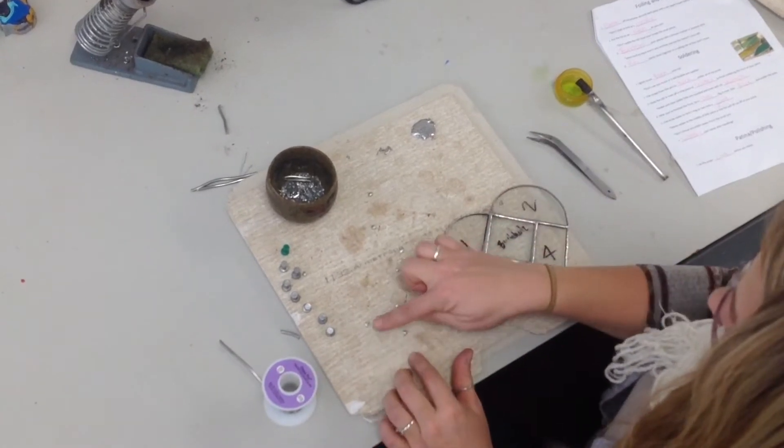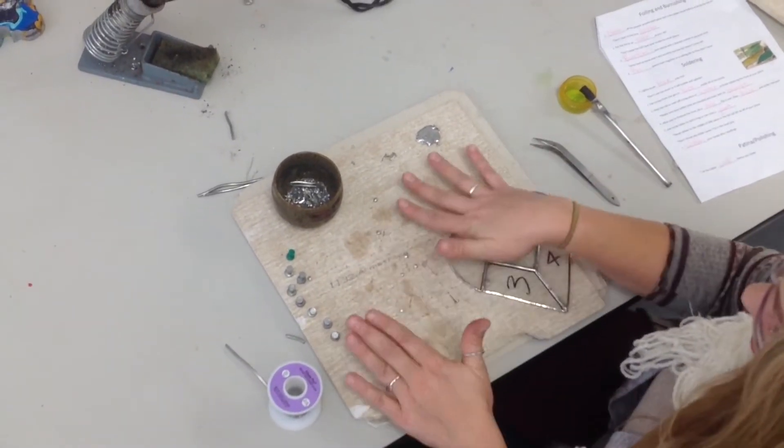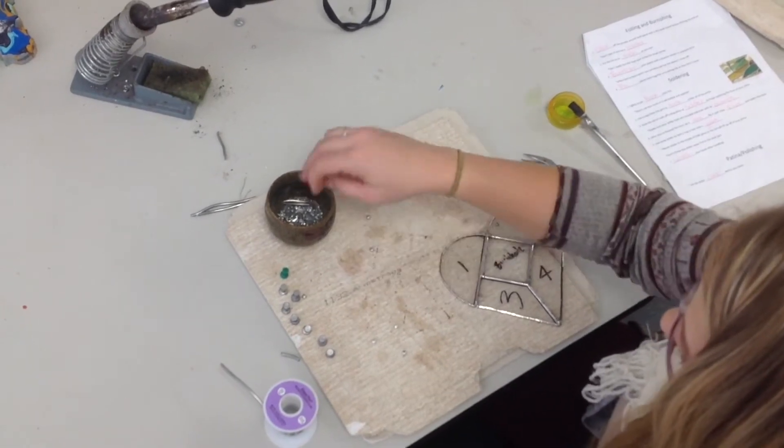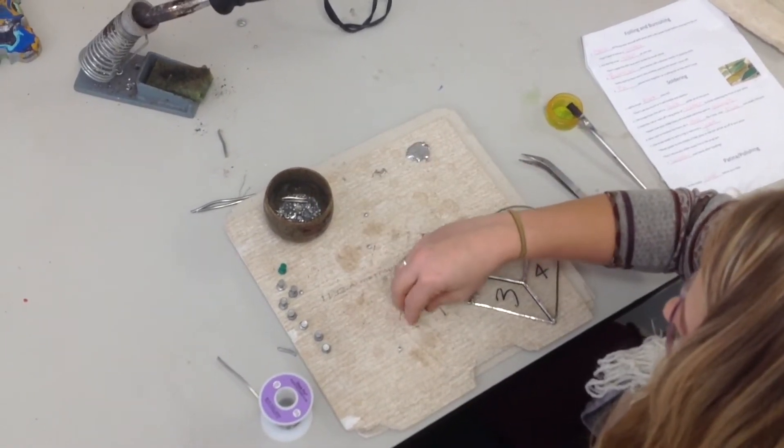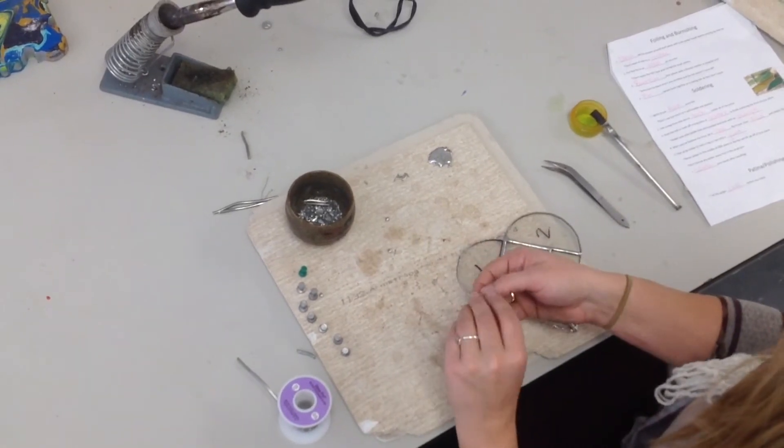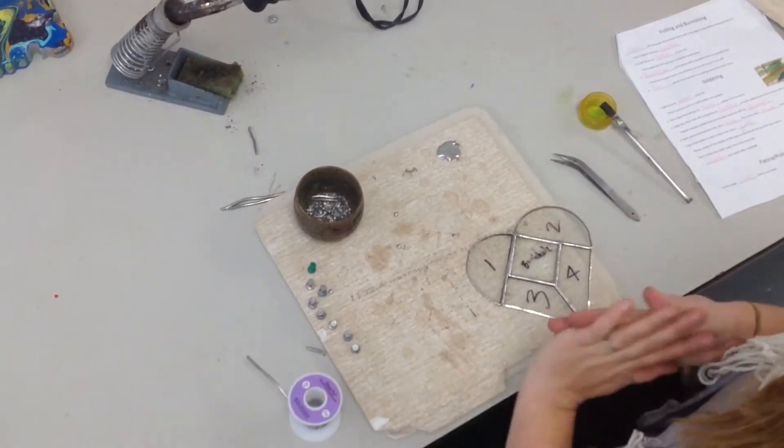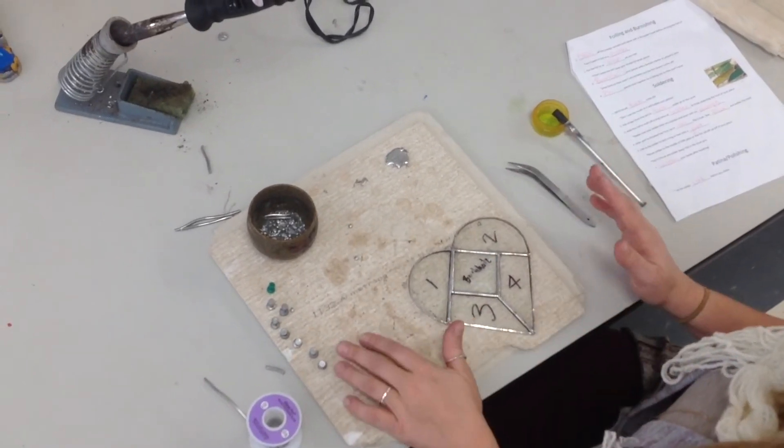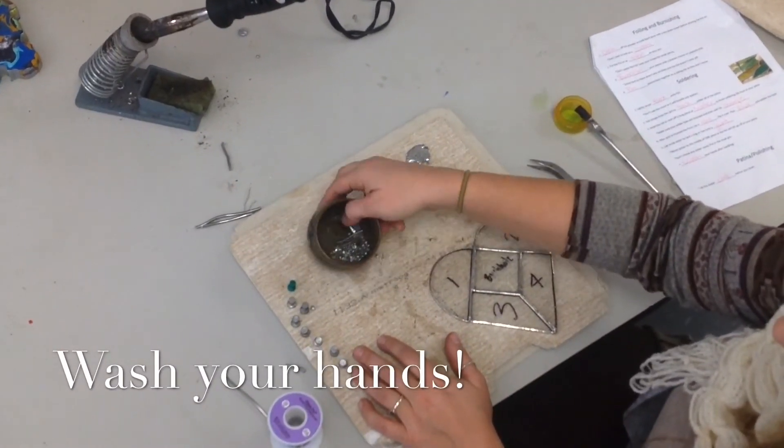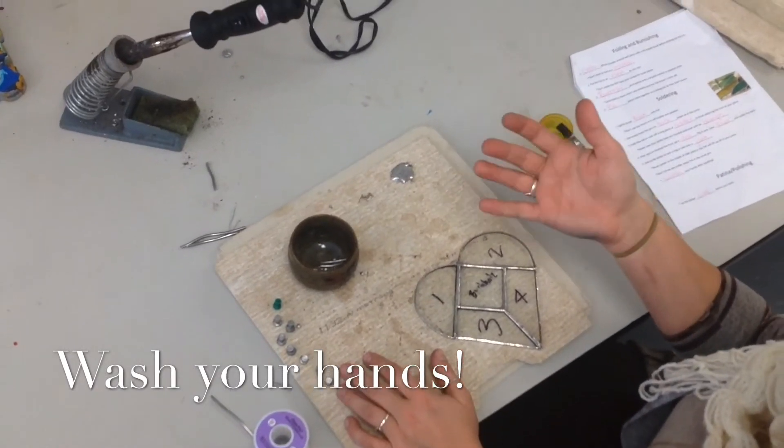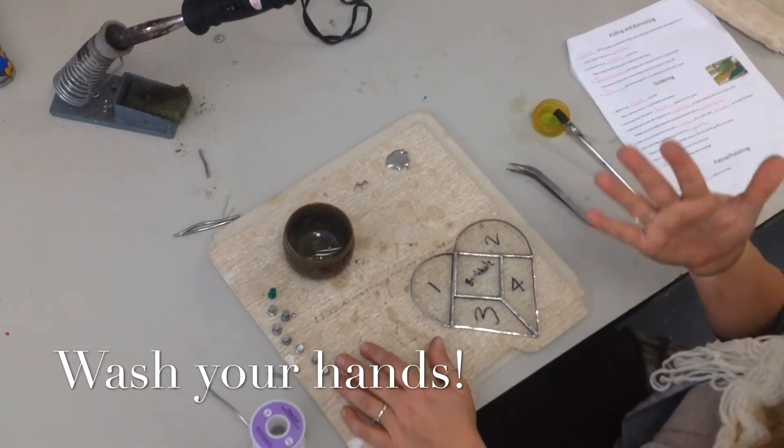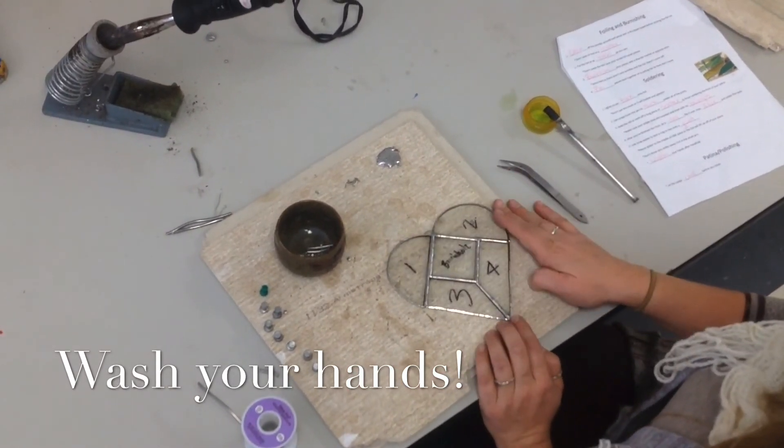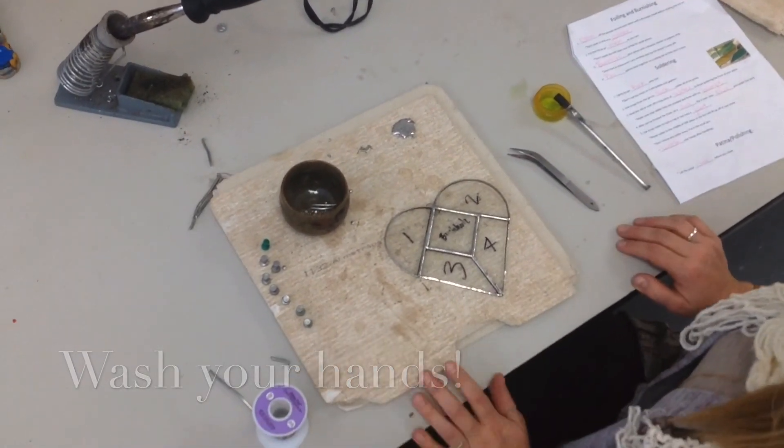Never throw this scrap solder away. Don't touch it when it's hot. But when it's cooled off, make sure you guys keep this and put it in the scrap jars because we use these to tack solder. Don't throw any solder away. Make sure you guys wash your hands because the solder has lead in it. You don't want this lead on your fingers when you're eating food and touching your face. You don't want to get it in your eyes or your mouth or anything. We're going to let this cool. After it's cool, we're ready to clean it off.